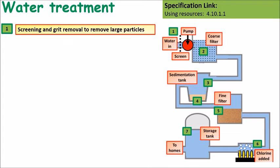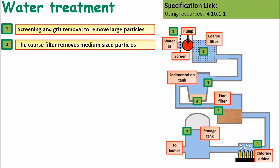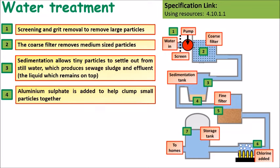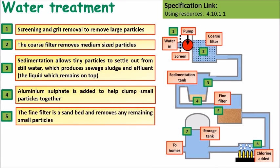The water treatment process starts off with screening, where grit and large particles are removed by a large screen. A coarse filter then removes medium-sized particles. Sedimentation is allowed to happen, so tiny particles settle out and form a sludge at the bottom which can be filtered out. The water is then passed through a fine sand filter which removes any remaining small particles.